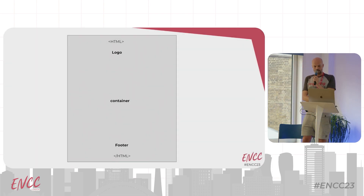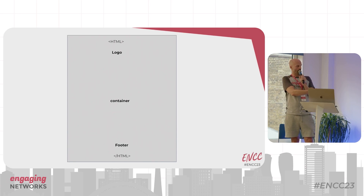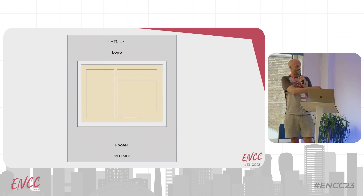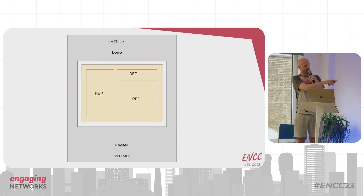I've done a little diagram to illustrate this. That's your template with your HTML — you might have your logo at the top and the footer, and in the middle you've got your container where the custom blocks go. Inside there is an example of a custom block: a replacement on the left for an image, a replacement on the right for a headline, and a replacement below for body text.